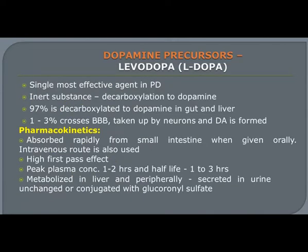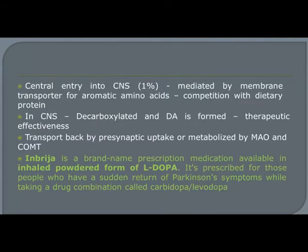L-Dopa is the single most effective agent in Parkinson's disease, used alone or in combination. Since dopamine does not cross the blood-brain barrier when administered systemically, L-Dopa — the immediate precursor of dopamine — is given instead. It crosses the blood-brain barrier, reaches the basal ganglia, where it is decarboxylated to dopamine and produces its therapeutic effect. The released dopamine in synaptic space is either transported back by presynaptic reuptake or metabolized by monoamine oxidase and catechol-O-methyltransferase.